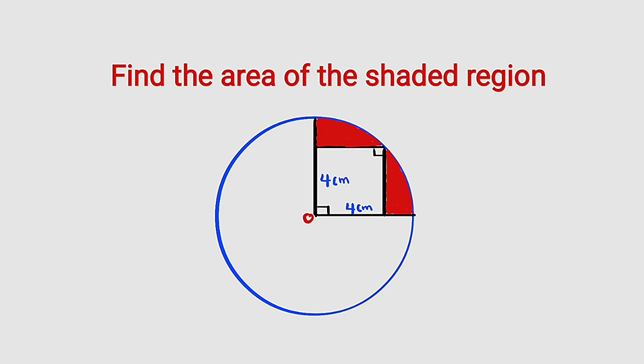What we have here is a circle. We have the center of the circle here, this is a radius, this is another radius. They meet at a right angle, which implies that the whole of this is a quarter circle, a sector.